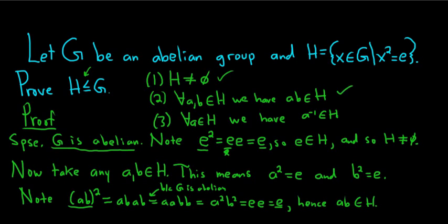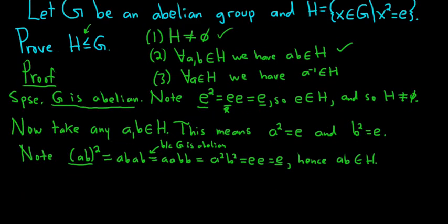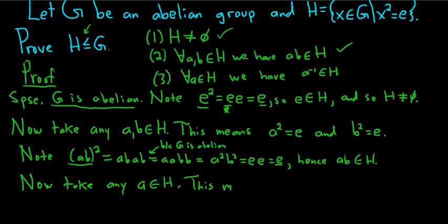Now we just have to show that H is closed under inverses. Take any a in H. Again, write down what it means: a squared is equal to e. We have to show that the inverse is in H, meaning (a inverse) squared is equal to e. So the natural thing to do is to look at (a inverse) squared.